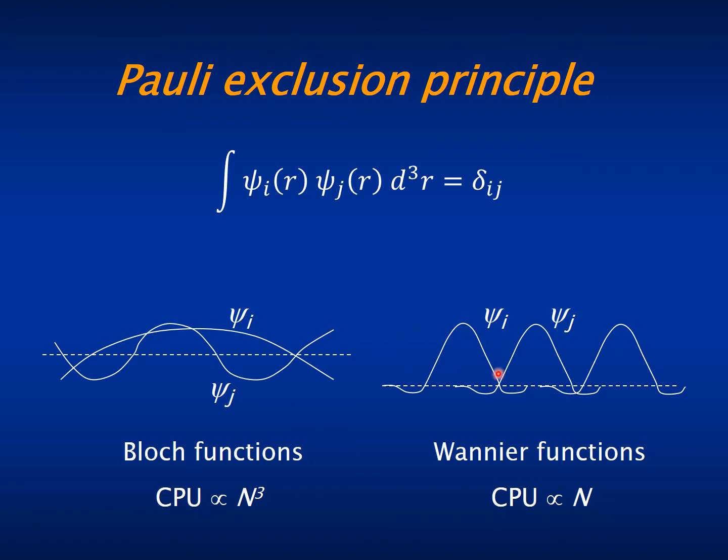That means that their overlap will be substantial or non-negligible with respect to a finite set of other Wannier functions around each other. And furthermore,